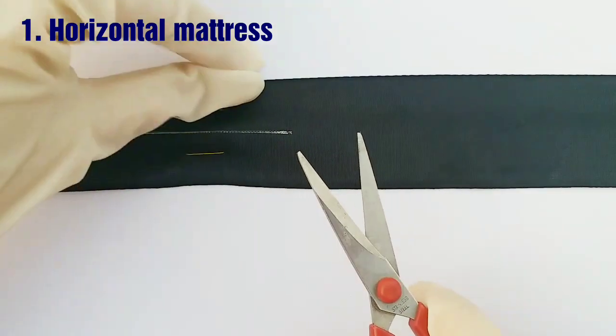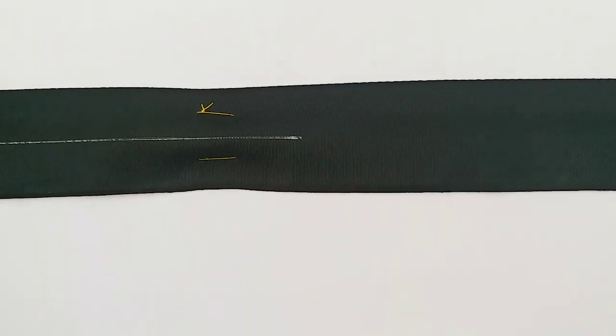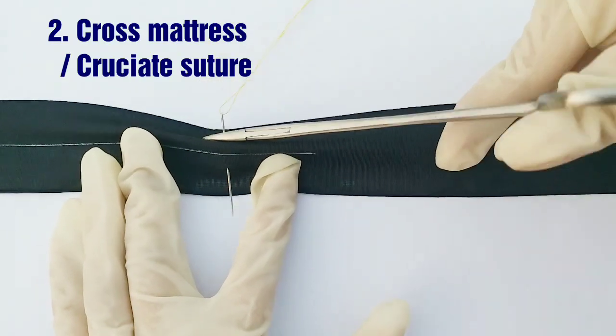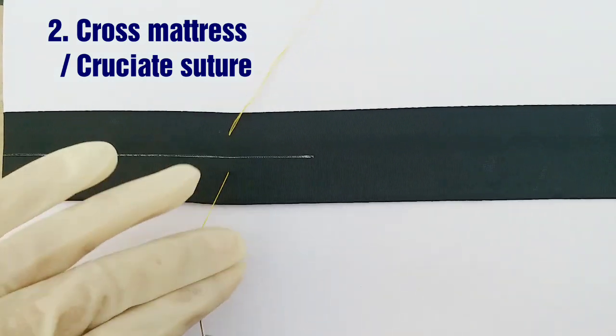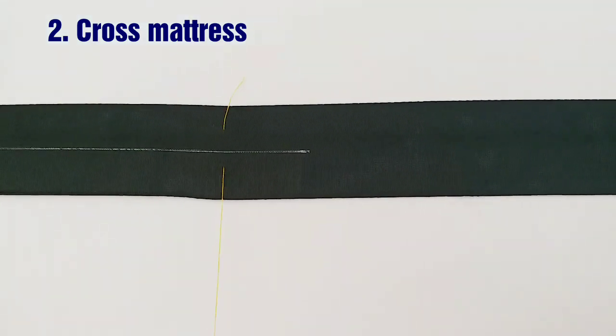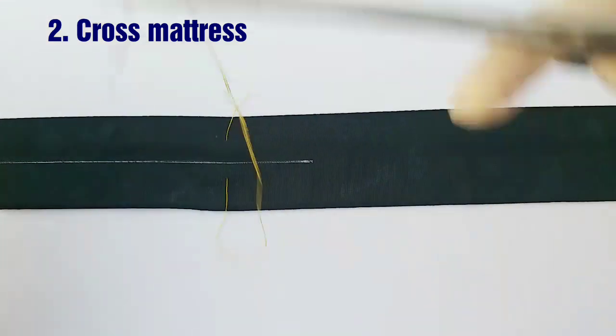Now cutting the excess material. The second one is the cross mattress. Again, we have to do the initial step, which is the same: taking the needle from one side of the incision to another, and then we will...